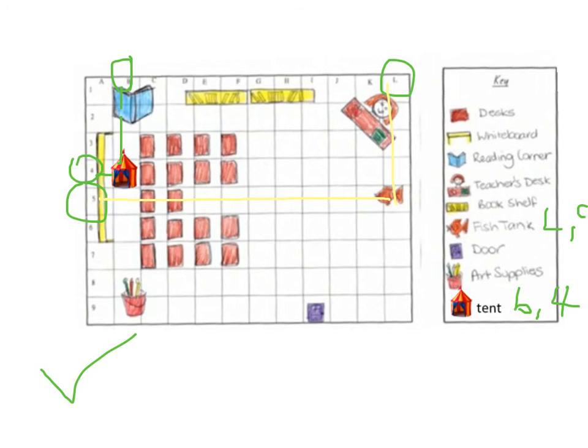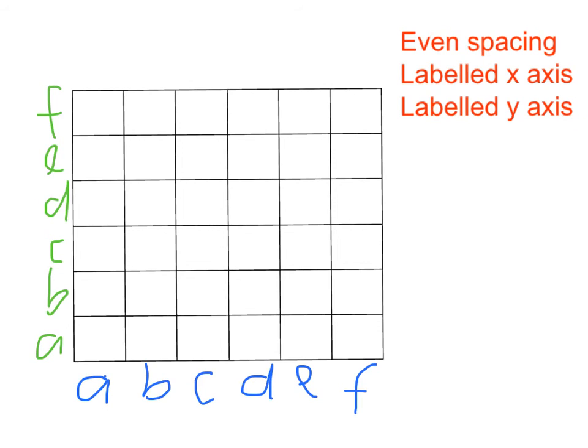So remember, if we want to have a fantastic grid map, we have to have a couple of things: even spacing between all of our squares, a labeled x-axis, yep, and a labeled y-axis, all either in the spaces or on the lines.